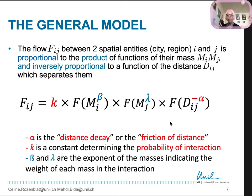Alpha is the distance decay or the friction of distance. It acts negatively. K is a constant determining the probability of interaction. Beta and lambda are the exponents of the mass indicating the weight of each mass in the interaction. They act positively to determine the flow of interaction.